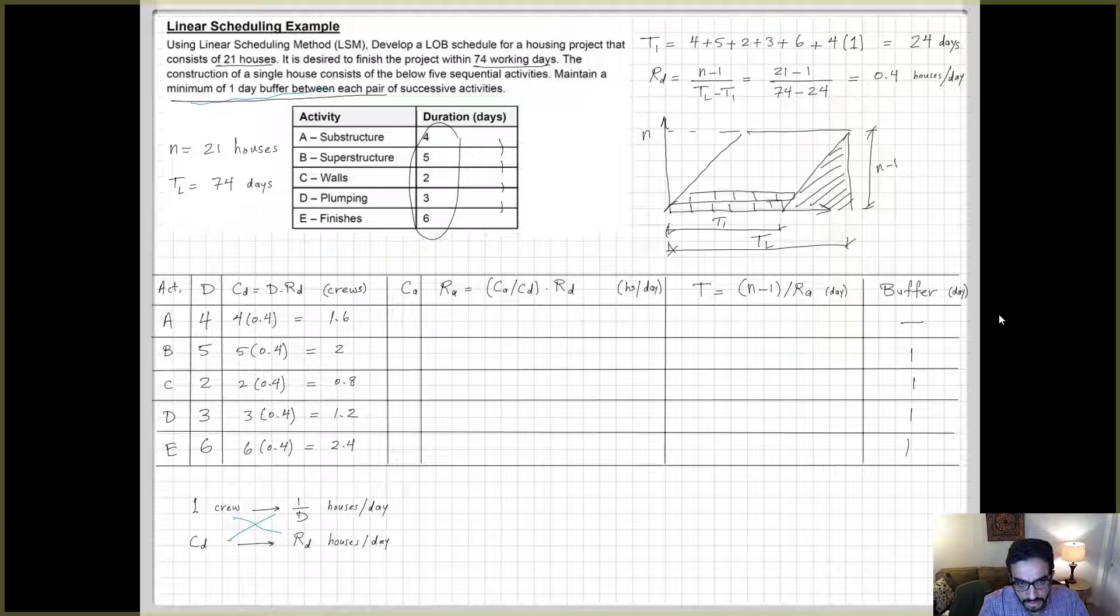You cannot use, for example, 1.6 crews or 0.8, so you have to round up. So CA, the actual crews that you use, are the round up of CD. So 1.6 will turn into two and the rest you can see. We're lucky to have for B the required crews to be two, so we just stick to two in this case.